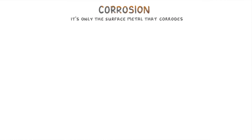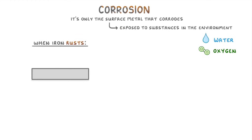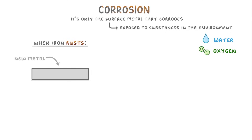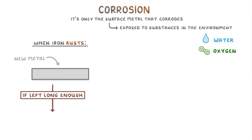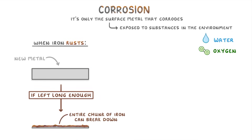One important thing to understand with corrosion is that it's only the surface of a metal that corrodes, because only the surface is exposed to substances in the environment like water and oxygen. When iron rusts, however, the rust that forms at the surface gradually flakes off, revealing new metal underneath. This means the next layer can also rust, and over time that bit will fall away as well, so if left long enough the entire chunk of iron can break down until there's nothing left.